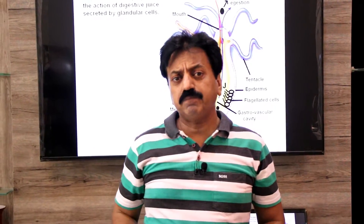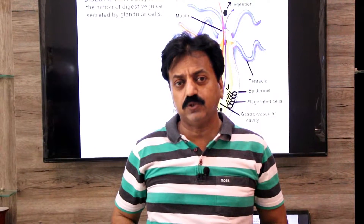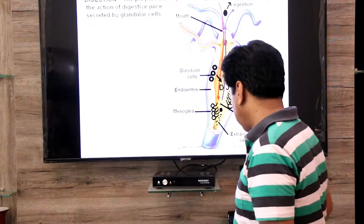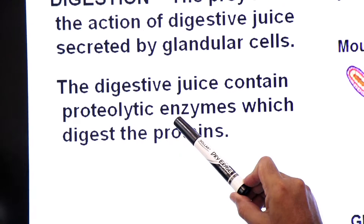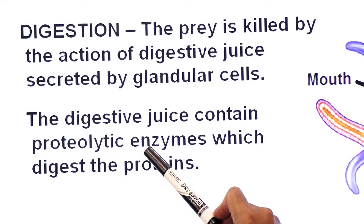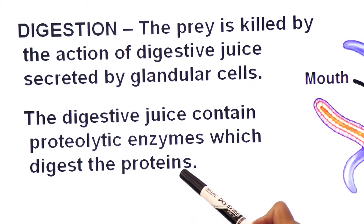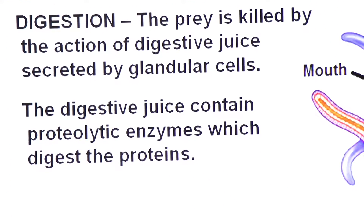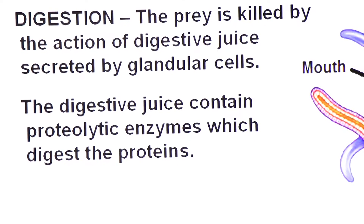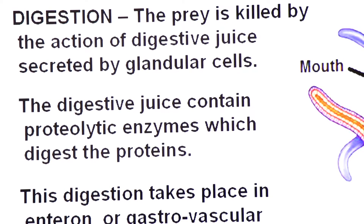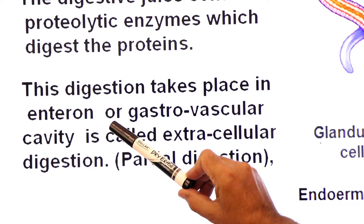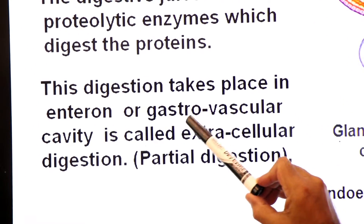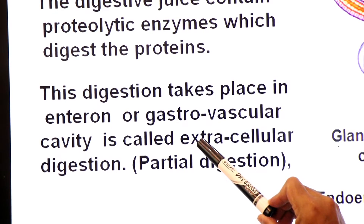There are proteolytic — protein-breaking — enzymes present. The food is digested extracellularly. The digestive juice contains proteolytic enzymes which digest protein. This digestion is extracellular; the digestion that takes place in the intestine or gastrovascular cavity is extracellular digestion.